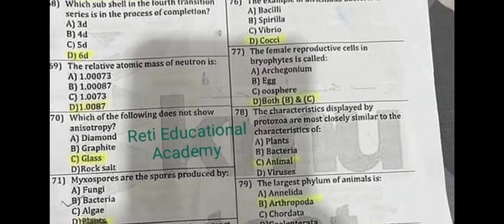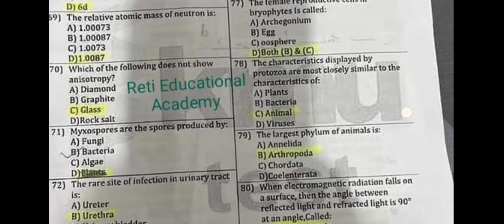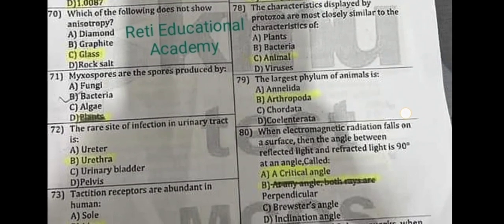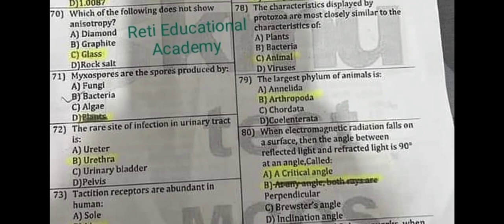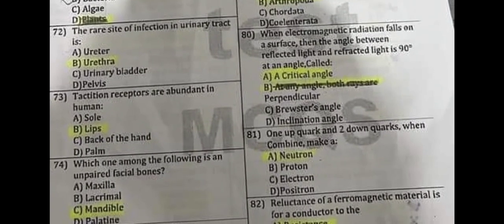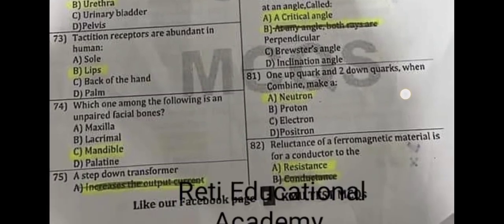Question number 71: Microspores are the spores produced by pollen grains. Question number 72: The rarest site of infection in the urinary tract is the urethra. Question number 73: Tactile receptors are abundant in humans and the correct answer is B: lips. Question number 74: Which one of the following is an unpaired facial bone? The correct answer is the mandible.